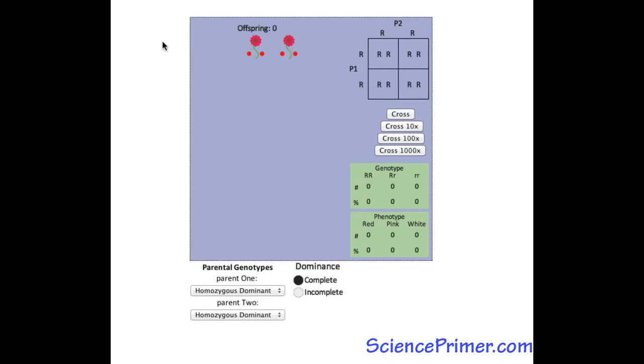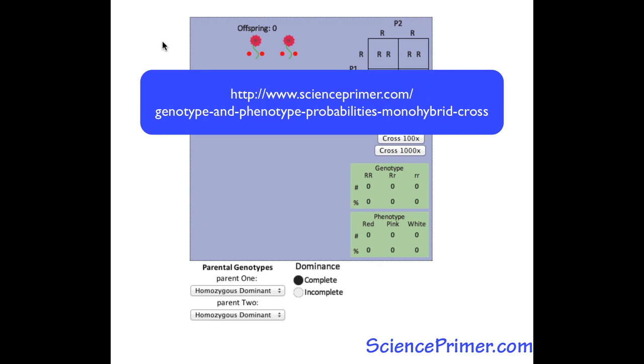This is an overview of the Genotype-Phenotype-Probabilities interactive illustration from SciencePrimer.com. The illustration explores how the probabilities predicted by a single trait Punnett square relate to the actual genotypes and phenotypes produced from repeatedly crossing two individuals. View the illustration and related content for free at SciencePrimer.com. There is a direct link to the illustration in the video description.